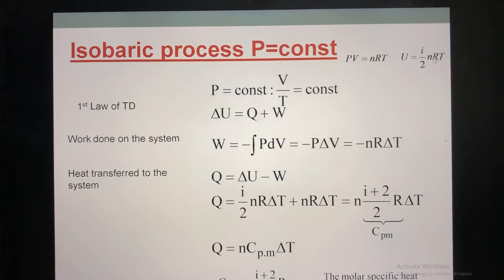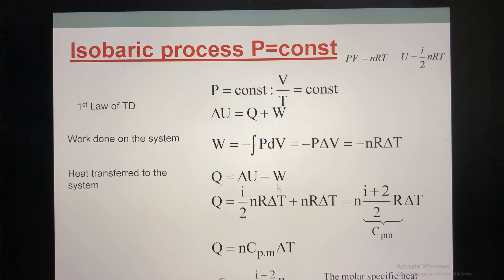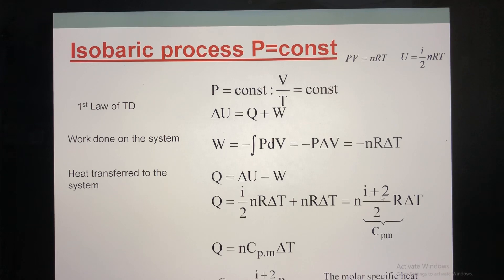You have the change of internal energy with delta T here, and you have the work. Now, how to calculate the heat? You put the change of internal energy and the work into the first law formula to get the heat. So you put delta U as I over 2 times nR delta T here, and the work done on the system. You see you have nR delta T in both terms, so you factor out nR delta T. Inside, you have I plus 2 over 2. Heat equals N times CPM times delta T.